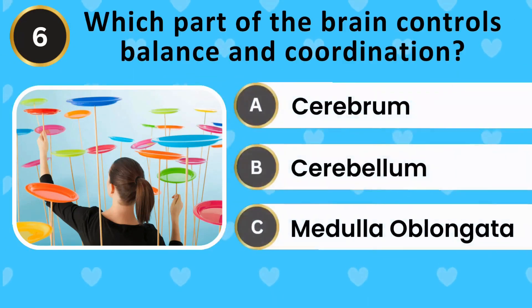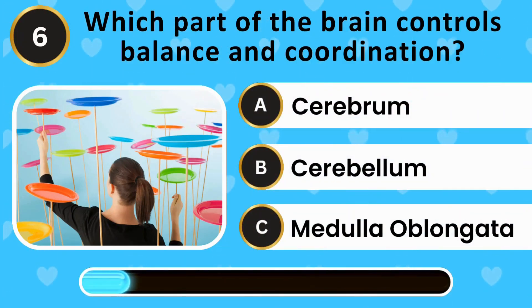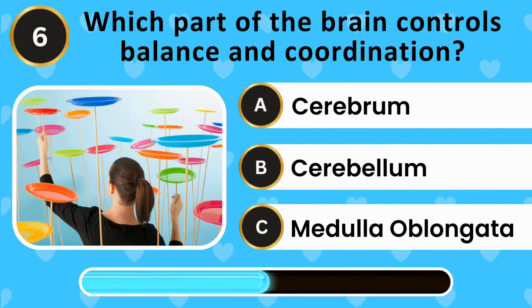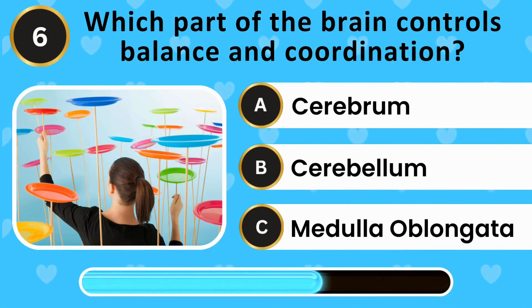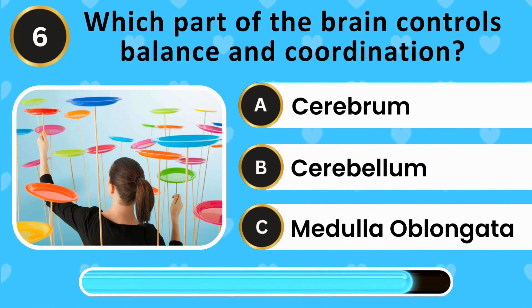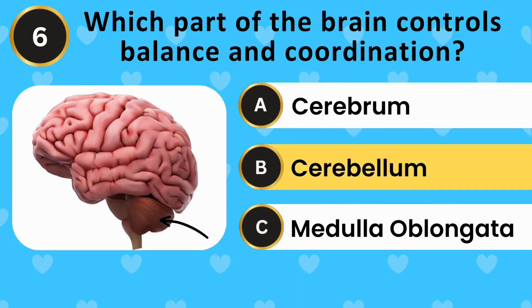Which part of the brain controls balance and coordination? Cerebrum, cerebellum, medulla oblongata. The answer is the cerebellum.